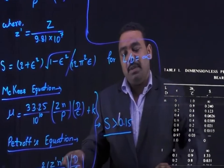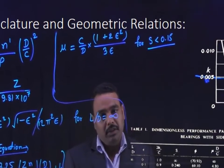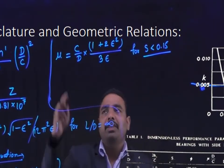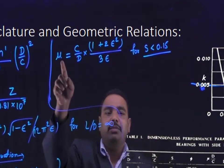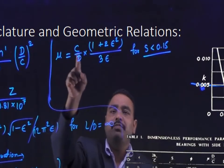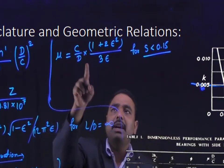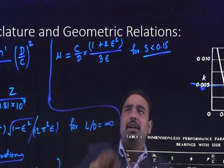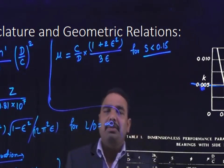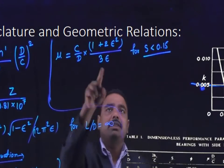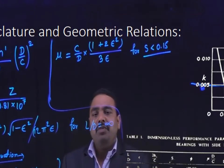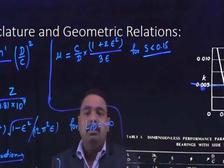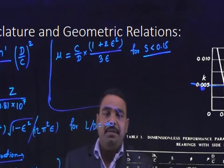If the Sommerfield number is less than 0.15, then you can calculate mu as (C/D) into (1 + 2 epsilon squared) divided by 3 epsilon.